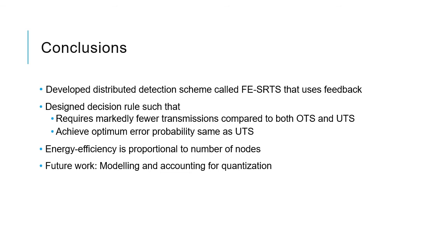Let me summarize. We developed a distributed detection scheme called FESRTS that uses feedback, with novel decision rules such that FESRTS requires markedly fewer transmissions compared to both OTS and UTS, while achieving optimal error probability same as UTS. Hence FESRTS is much more energy efficient, with efficiency proportional to the number of nodes at higher SNRs. An interesting avenue for future work is modeling and accounting for the quantization of LLR during transmission. Thank you.